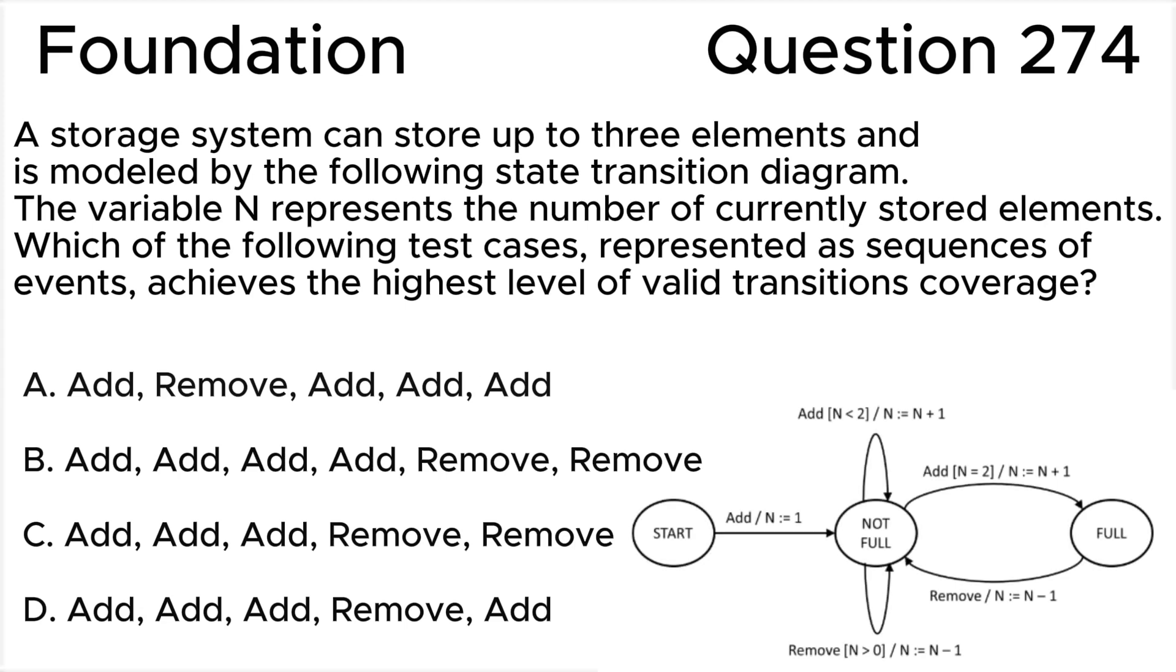ISTQB Foundation Level Question 274: A storage system can store up to three elements and is modeled by the following state transition diagram. The variable N represents the number of currently stored elements. See figure.